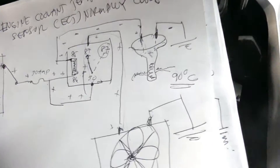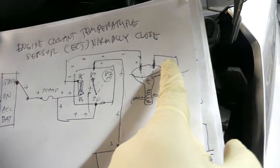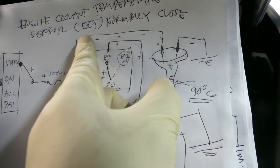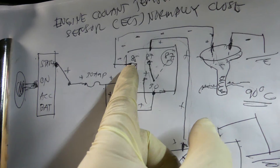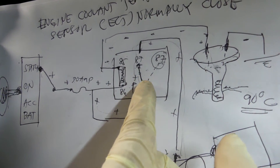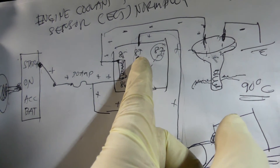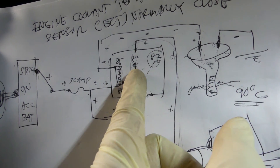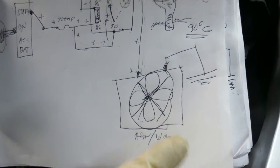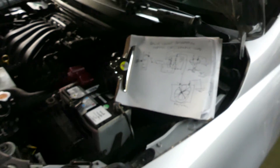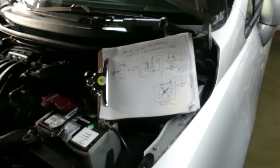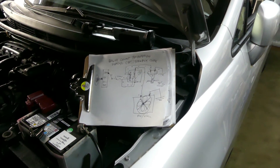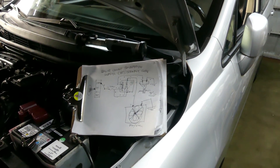Let's put the sensor back and wait a few seconds — the fan shuts off. What happened is that there is a negative connection again through the sensor, so the coil energized and the contact was pushed from 87A back to number 87, creating an open loop again, so the radiator fan no longer gets power. That's how the normally closed engine coolant temperature sensor works.